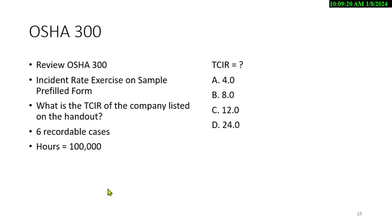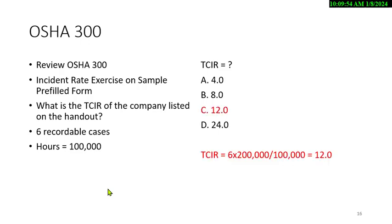Now we calculate the incident rate — it may be called TCIR, TRIR, or IR. We had six recordable cases. Remember, we do not count first aid cases. Hours worked was 100,000. Six cases times 200,000 divided by 100,000 hours gives a TCIR of 12. That means really 12% of the workers got hurt that year, which is not good.